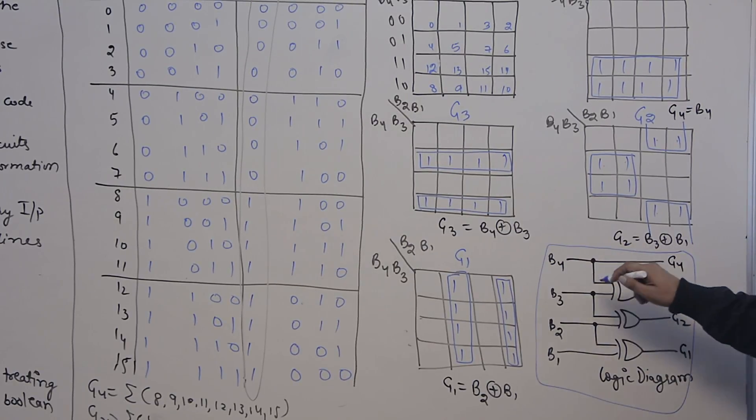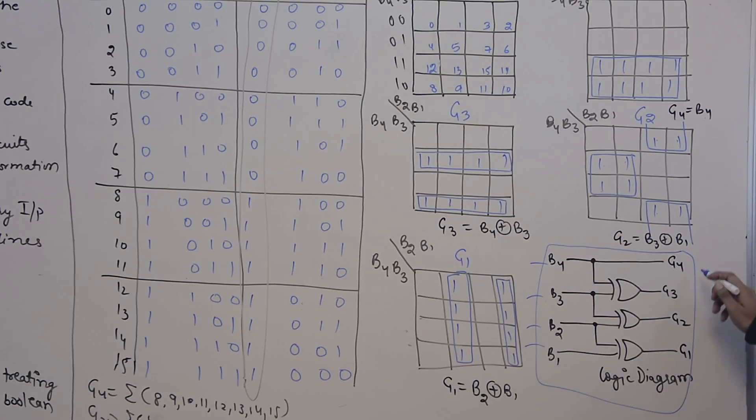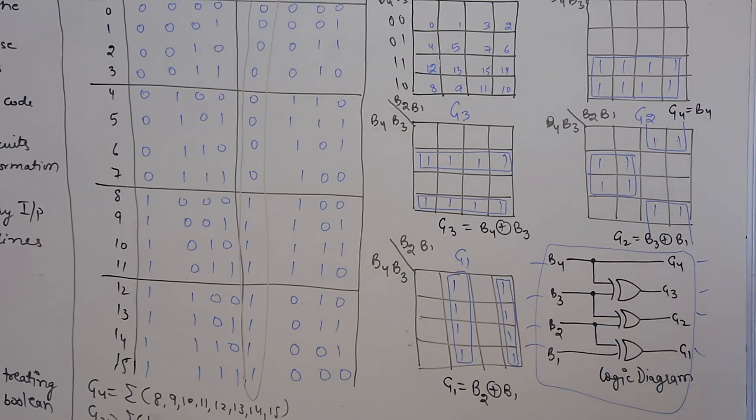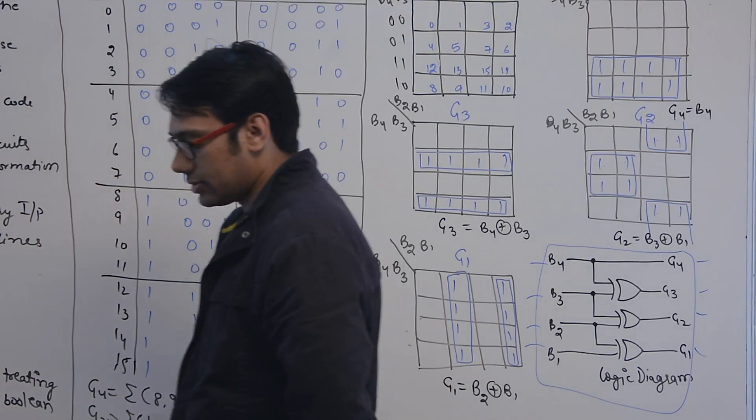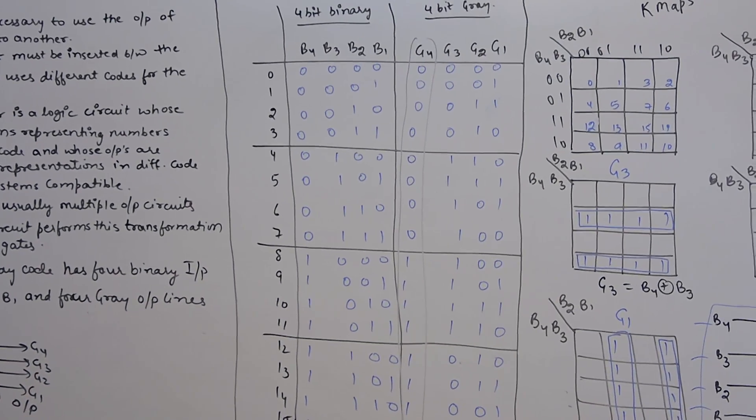You can put this circuit inside a diagram like this. So it is taking 4-bit binary code as input and it is giving 4-bit gray code as output. This is how you can easily convert one kind of circuit diagram to another kind of circuit diagram.